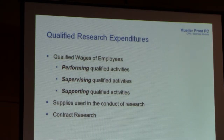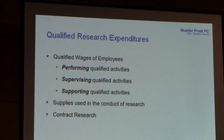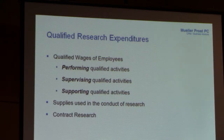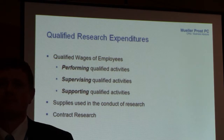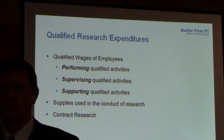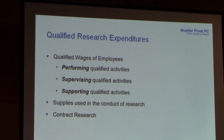Direct supervision counts as well — an engineering manager reviewing or participating in design review meetings is qualified research. The second expenditure type is supplies used in the conduct of research: anything tangible used in the research process not subject to depreciation. Supply costs might be prototypes, prototype jigs, tooling, or fixturing — or even the product itself. I could sell that prototype to my customer and it still counts. For example, Trinity Industries made ships for the Navy, built what they called 'first in class,' sold those prototypes, and got to include the material costs.